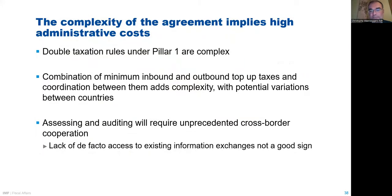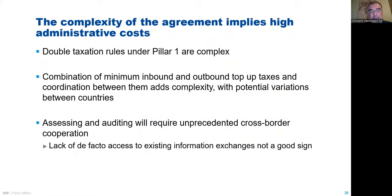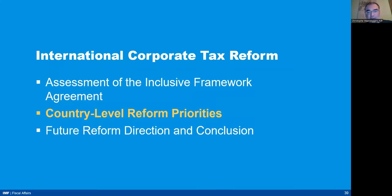We assess that administrative complexity will likely be quite high from implementation of the agreement. Particular areas include rules for relieving double taxation under Pillar 1, and the sequential application of various minimum tax rules on inbound and outbound flows. These rules require close coordination between countries as they need domestic law implementation with potential for variation and mismatches. Existing exchange of information networks already cause problems for developing countries, so more work will be needed in that area as well.